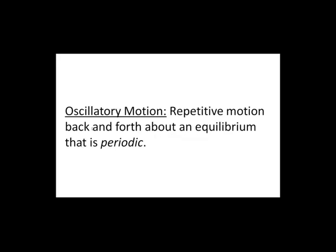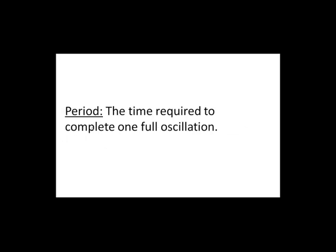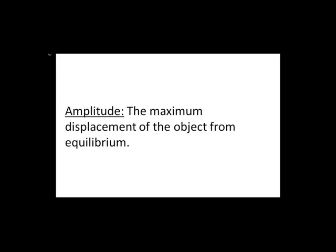Let's be more specific and define oscillatory motion as repetitive motion back and forth about an equilibrium that is periodic. The period and the amplitude typically characterize this motion. The period is the time required to complete one full oscillation. The amplitude is the maximum displacement of the object from equilibrium.